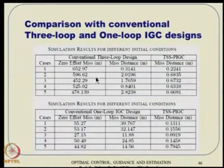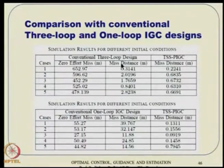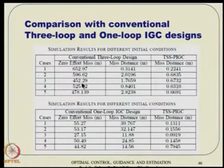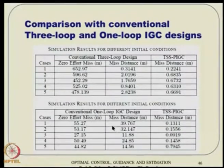Conventional designs show: if the zero-effort miss is on the order of 500–600 meters without corrections, the conventional three-loop design still gives very low miss distance. Partial IGC gives even lower values. But compared to the one-loop IGC — which shows 50 meters, 40 meters — these designs give less than 1 meter level accuracy. The one-loop IGC works only with small perturbations. If initial conditions give a zero-effort miss of half a kilometer or more, it does not work at all and fails to correct the error. In our experience, one-loop IGC was a complete failure for large initial errors.